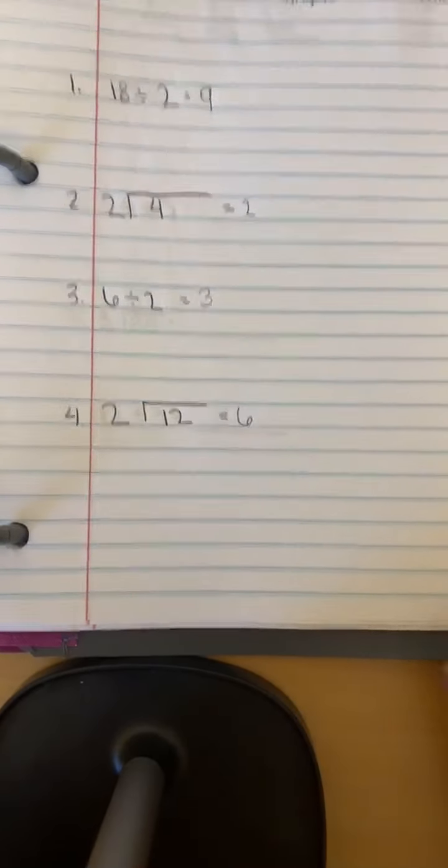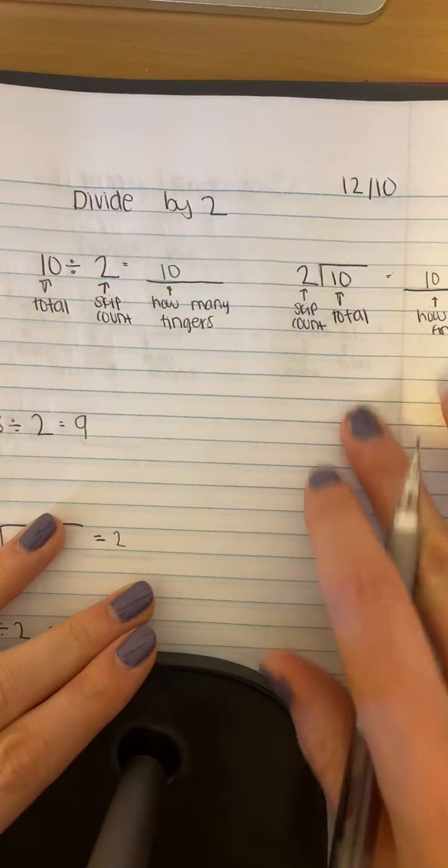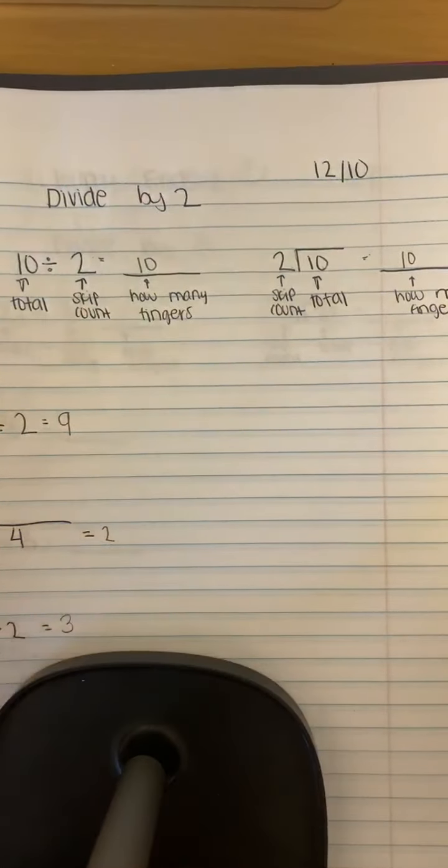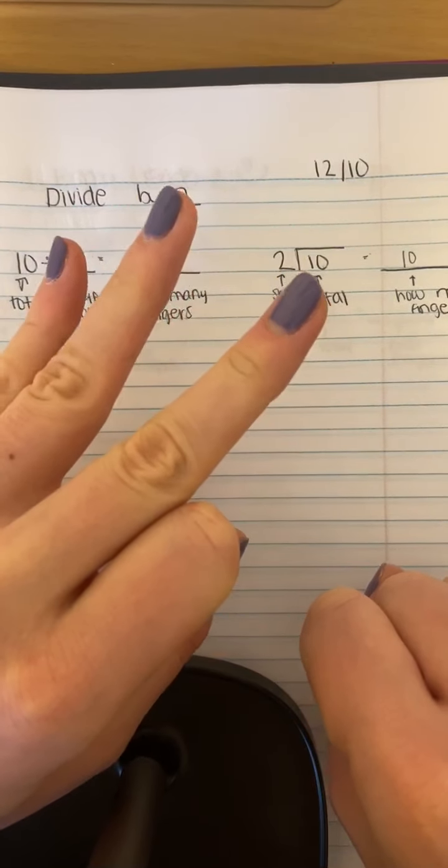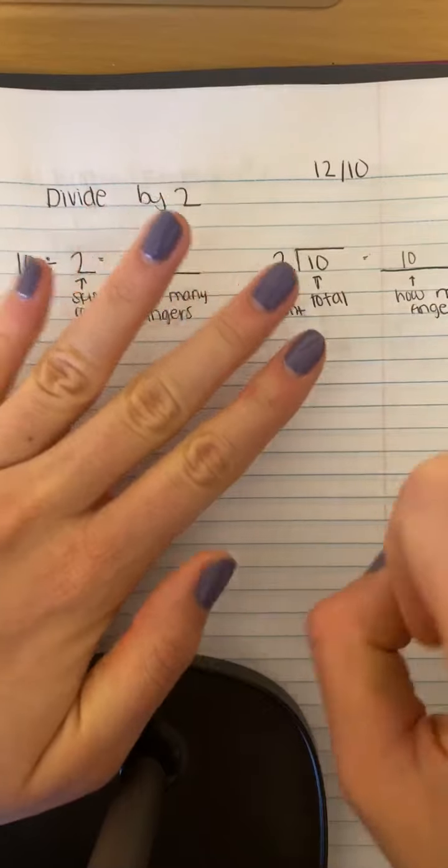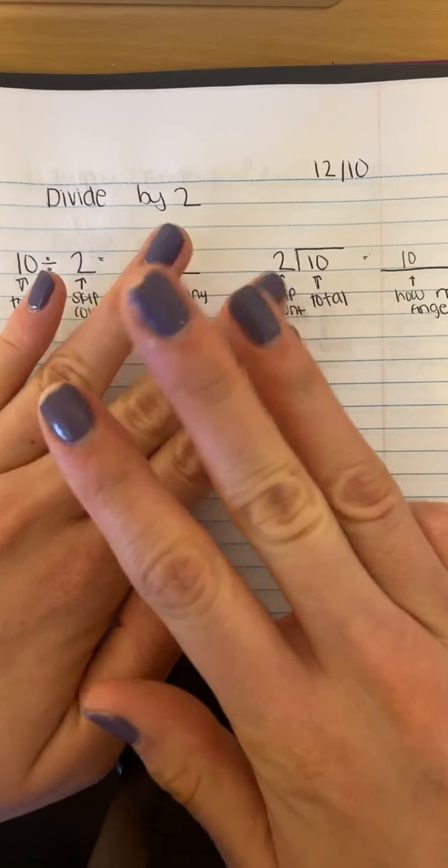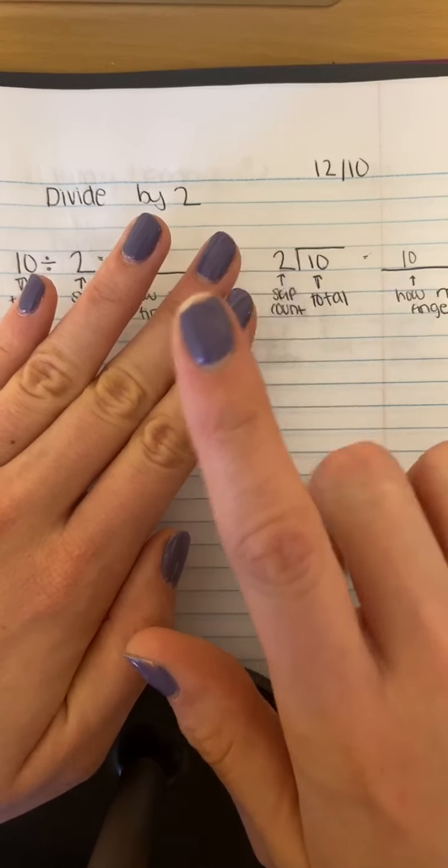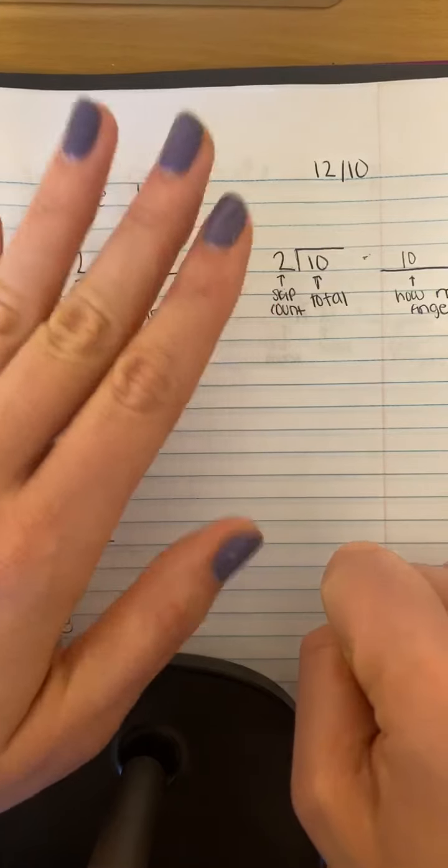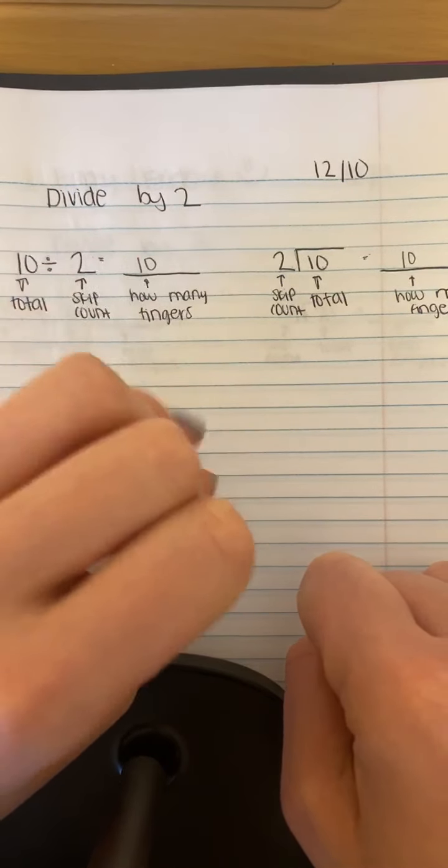So let's practice skip counting by our twos forward and backwards. And remember, you can write out your answers down here and that will help you along the way. Okay, so two, four, six, eight, ten, twelve, fourteen, sixteen, eighteen, twenty. Twenty, eighteen, sixteen, fourteen, twelve, ten, eight, six, four, two.